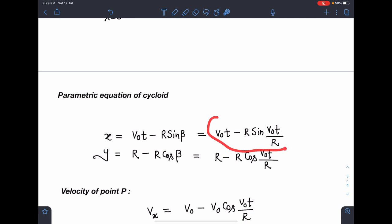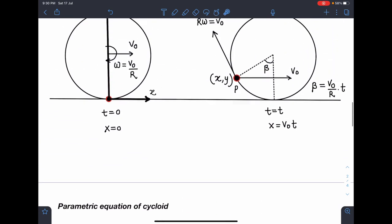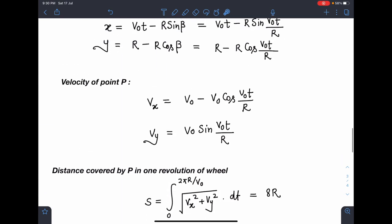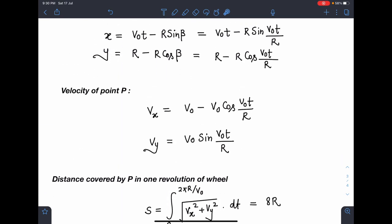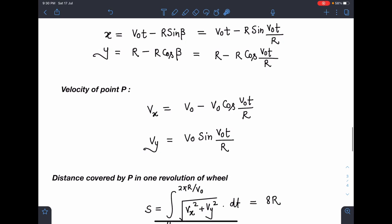Similarly, the y coordinate I can write as r - r cos β. This distance I have to write, so it is r - r cos β. We are going to get r - r cos(v₀t/R). This is the velocity of point P. By differentiating we can write, or directly from the velocity diagram we can use.